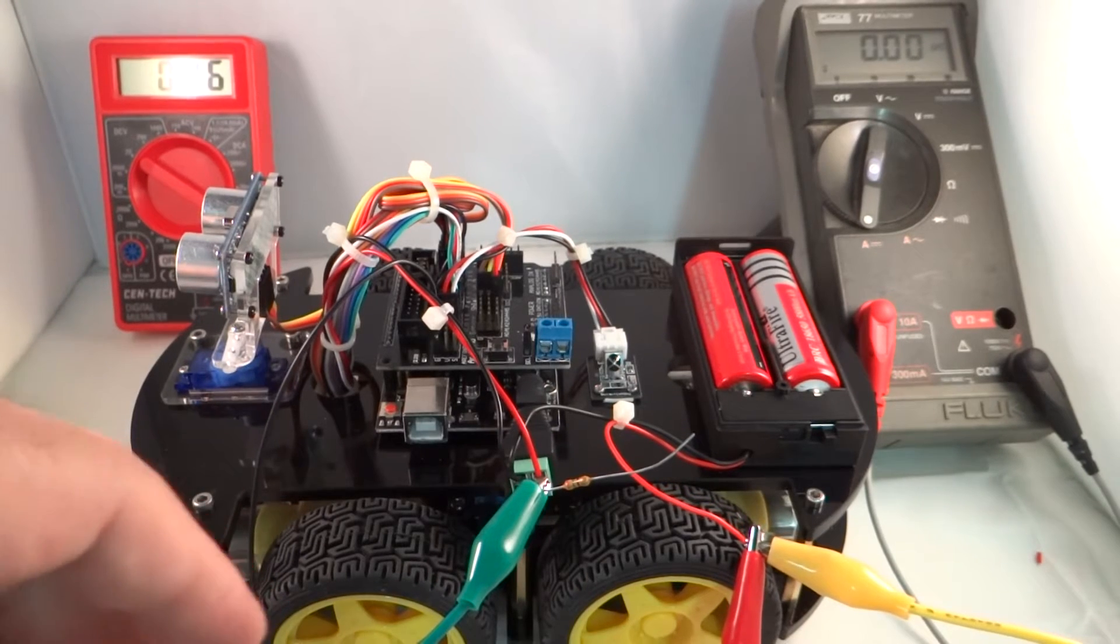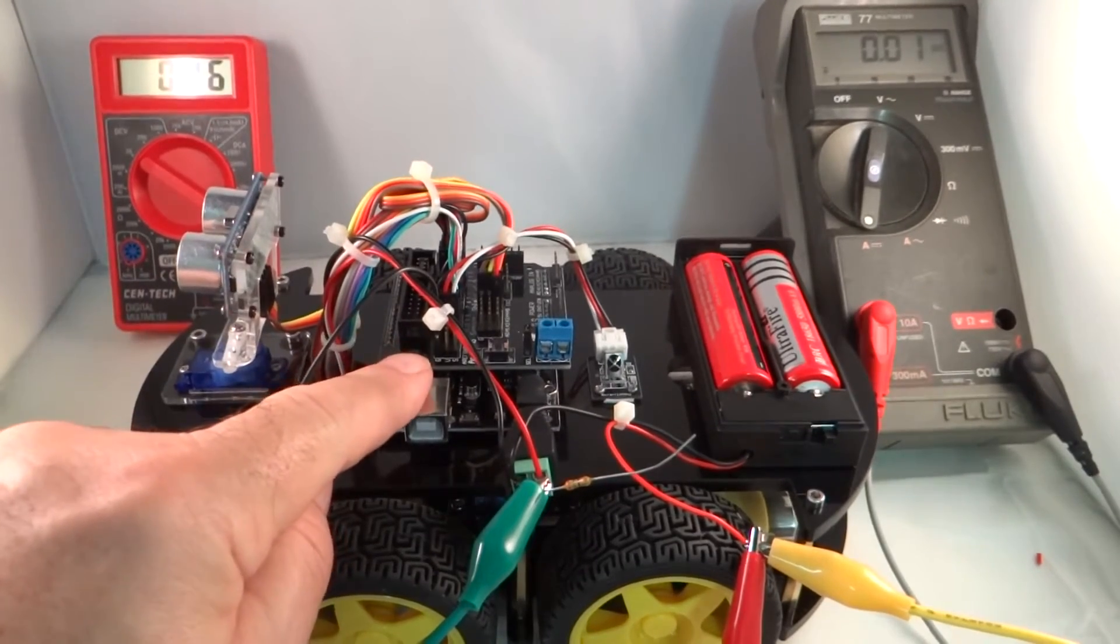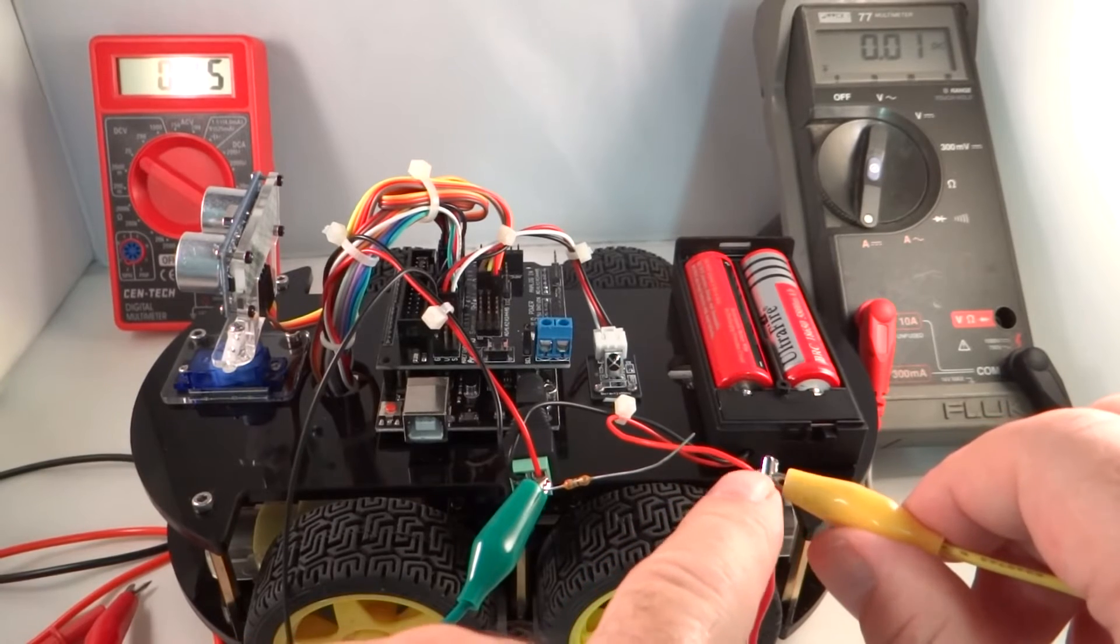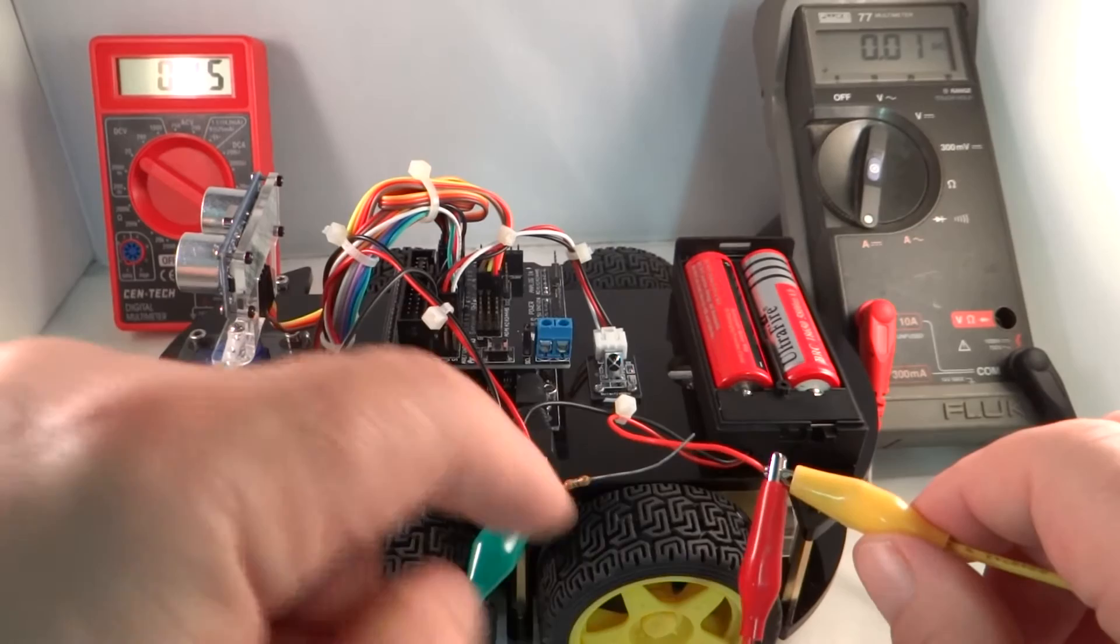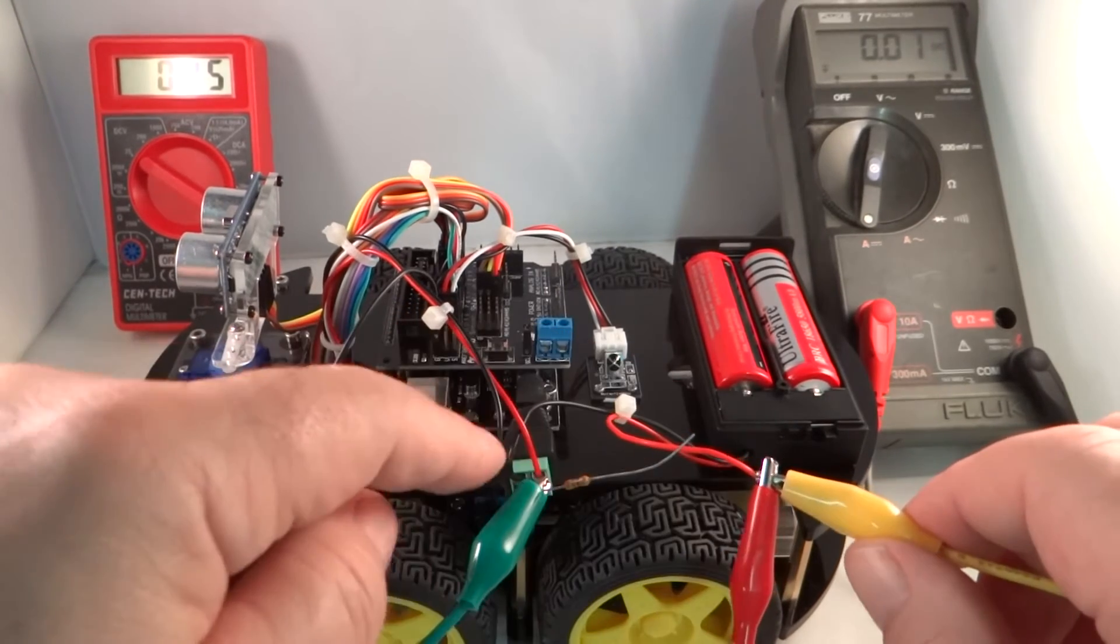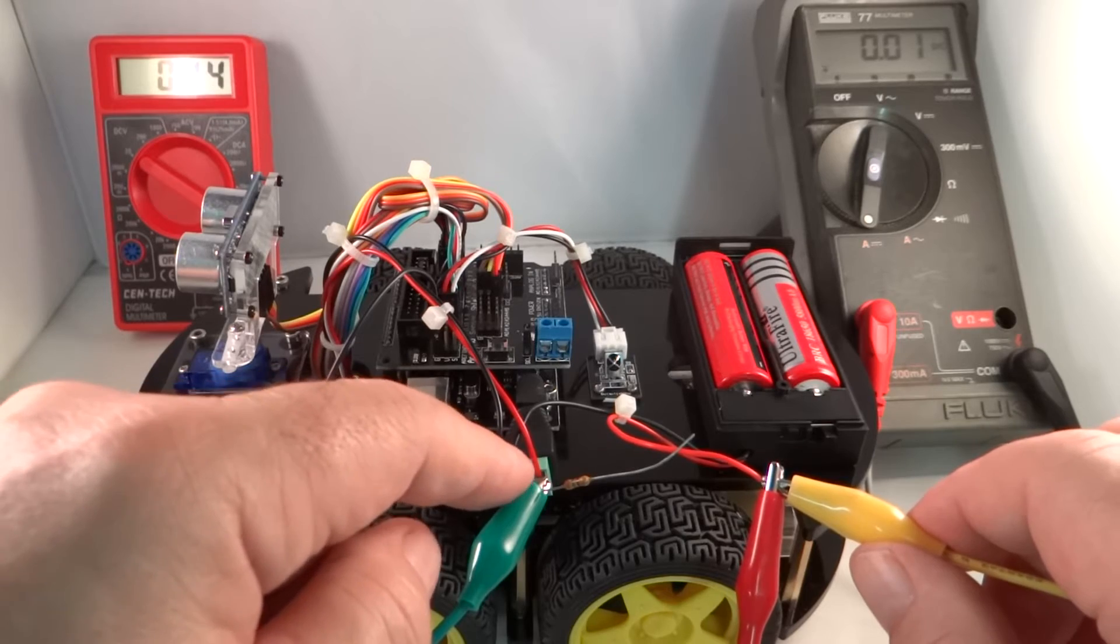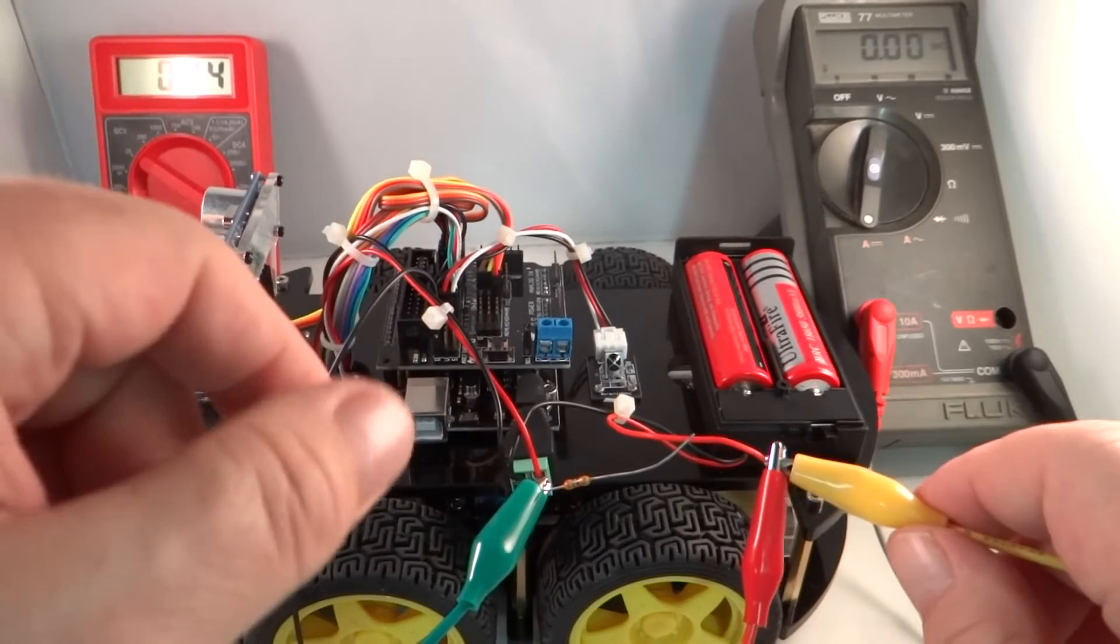So now we are measuring voltage from ground to directly on the battery side. If we were to put the voltmeter lead here we would maybe pick up a slightly lower voltage because there is a small resistance going through the ammeter.